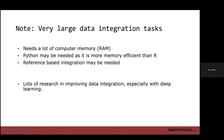Sometimes you have a lot of cells and data integration becomes difficult. You'll need a computer with a lot of memory. Sometimes you might need to move from R to Python, which is more memory efficient, or reference-based integration may be needed. There's lots of research developing new integration methods, especially new deep learning methods. Over time things are improving and hopefully the resources needed will decrease as well.